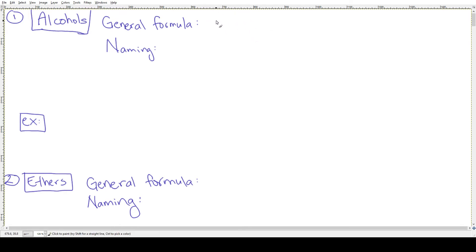So the general formula of an alcohol is R-O-H, where R means the rest of the molecule. So it's like a carbon chain that has OH tagged onto the end, and these guys, their naming is the group name plus alcohol, or change the ending to -ol. So for example, you could be asked to name this.